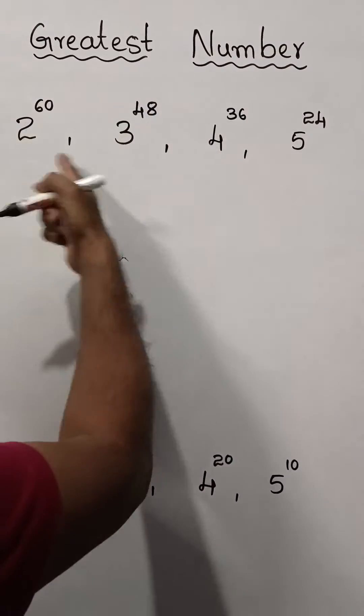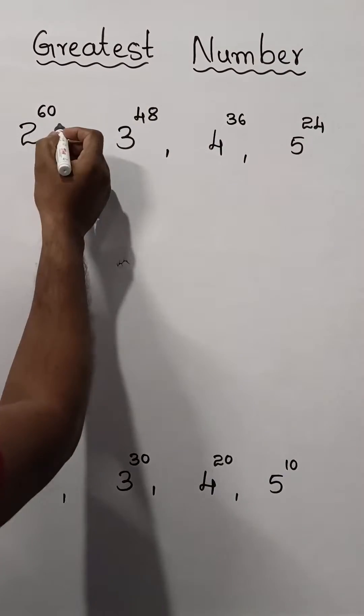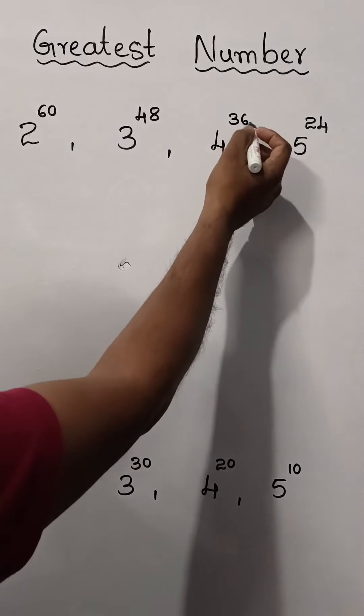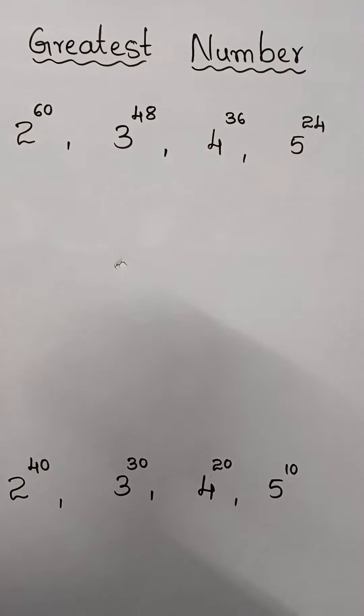Find the greatest number of all these exponents: 2 power 60, 3 power 48, 4 power 36, and 5 power 24.